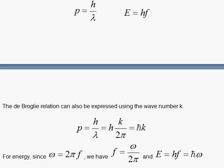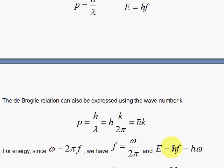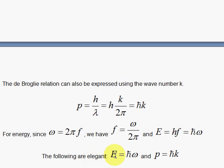And then for the energy, if I multiply by 2π and divide by 2π, then h over 2π is ℏ, and 2π f is what we call the angular frequency. So we get this nice pair of equations, E equals ℏω, and p is ℏk.